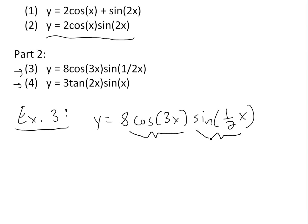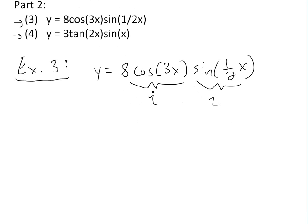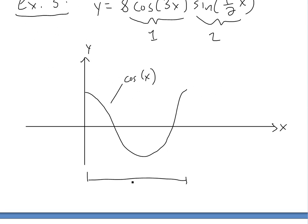So what we do is find the period for each one — we'll call them 1 and 2. If we look at the function cos(ax), as I showed in my earlier video, the period is going to be 2π. So P equals 2π here.